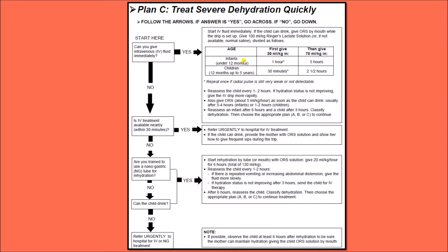After six hours, the infant is reassessed. In case of older children — between one year and five years — the first 30 ml per kg is given in 30 minutes, and the next 70 ml per kg is given over the next two and a half hours, so exactly half the time. After three hours, we reassess the child.